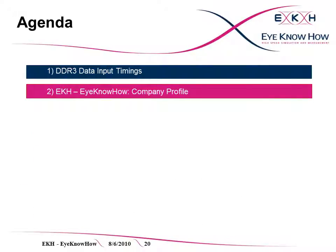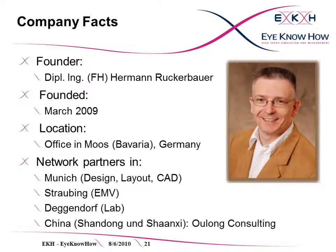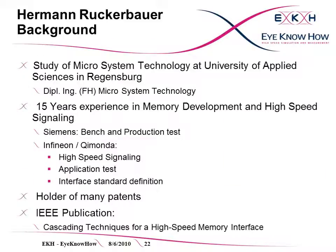And now, as threatened in the beginning, the boring part with some information on iKnowHow. The founder of iKnowHow, Hermann Ruckerbauer, is speaking. iKnowHow was founded in March 2009 in Mohs, a small village in Bavaria, Germany. We have network partners in Munich, Straubing, Deckendorf and China. Hermann Ruckerbauer studied Microsystem Technology at the University of Applied Sciences in Regensburg. He gained significant experience in memory development and high-speed signaling during his career at Siemens, Infineon and Kimonda. Out of this time, he holds many patents and has quite some publications.